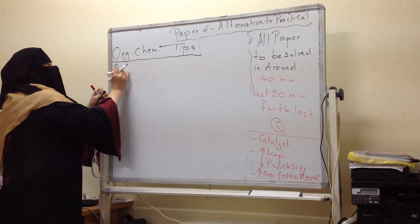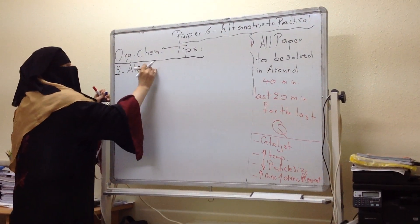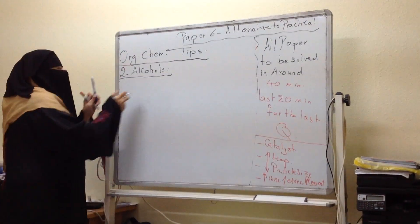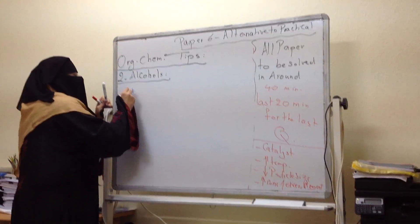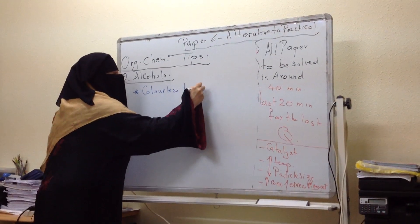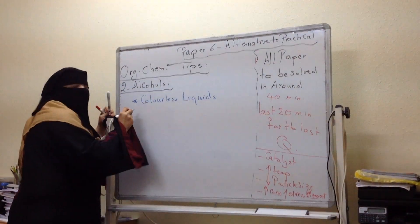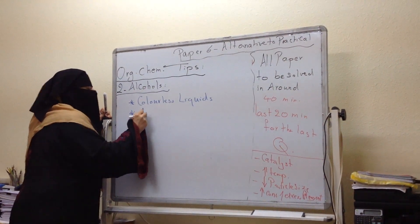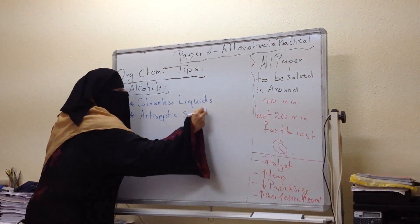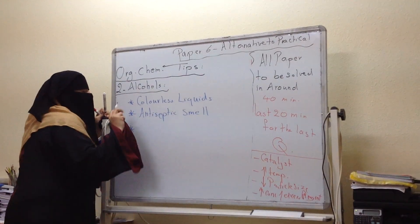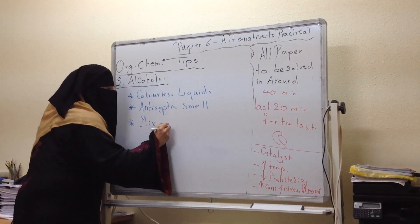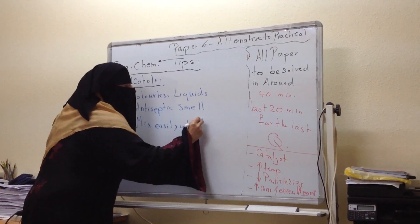Now let's look at alcohols. Second thing, let's look at alcohols. What are the distinguishing features of alcohols? First thing: they are colorless liquids. They have antiseptic smell or antiseptic odor. Also, they mix easily with water.